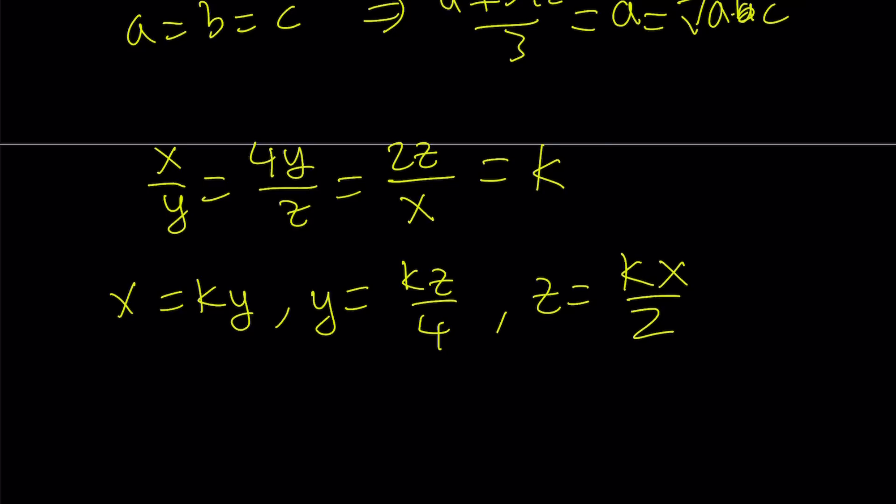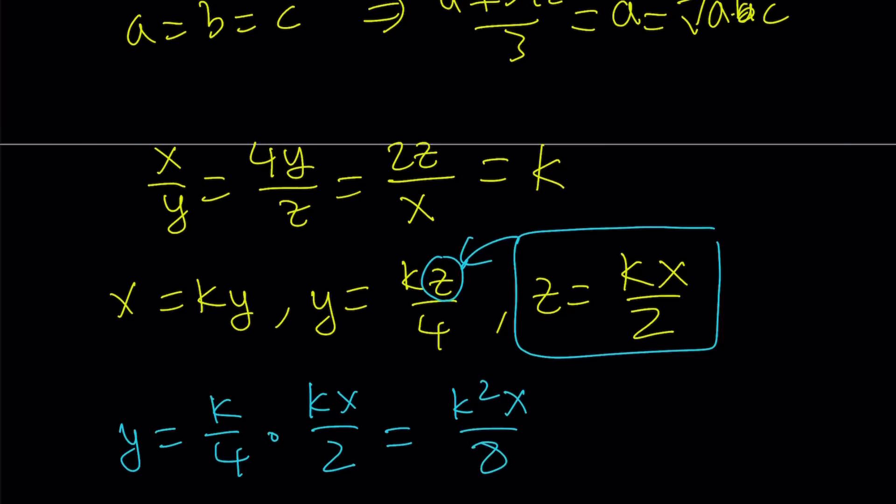Here's what I'd like to do. I want to substitute z with kx over 2 here, and that gives me y equals k over 4 times kx over 2, which can be written as k squared x over 8. But y can also be written as x over k from here. Then if I set y equal to x over k, x doesn't equal 0, x cancels out.